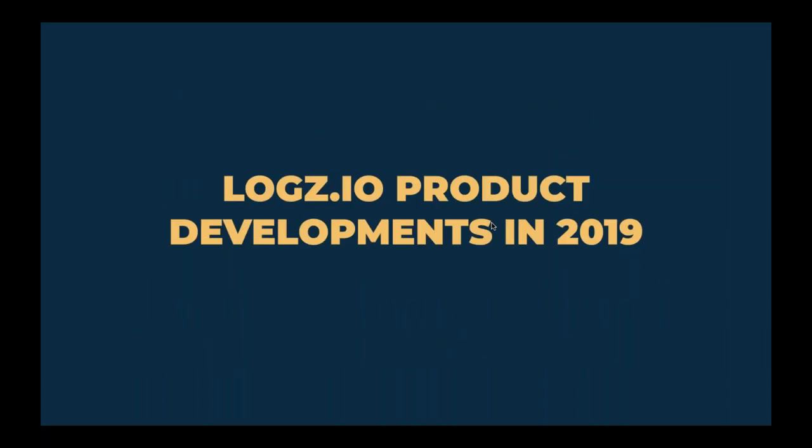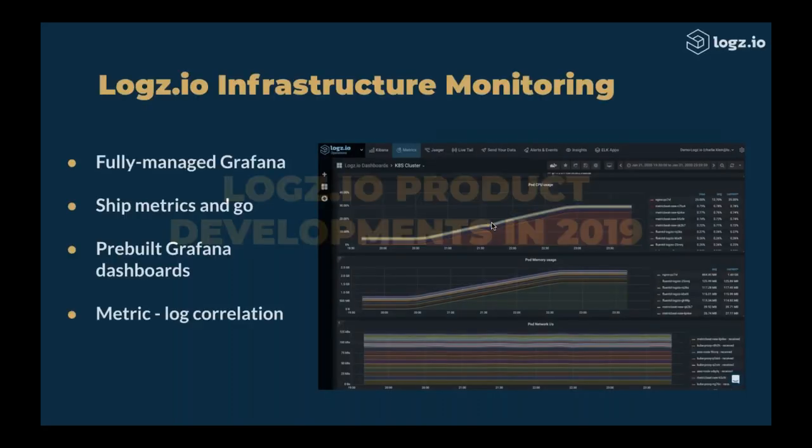A few things we've done in 2019 — it's been a pretty busy year. We've developed over 40 features and almost 100 new integrations to services we support. We also released one new product in 2019, which is infrastructure monitoring, and I'm going to go through in detail and show you what we've done.